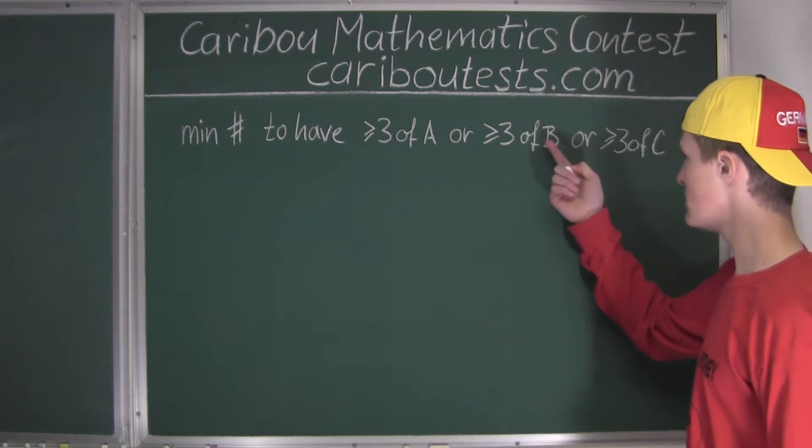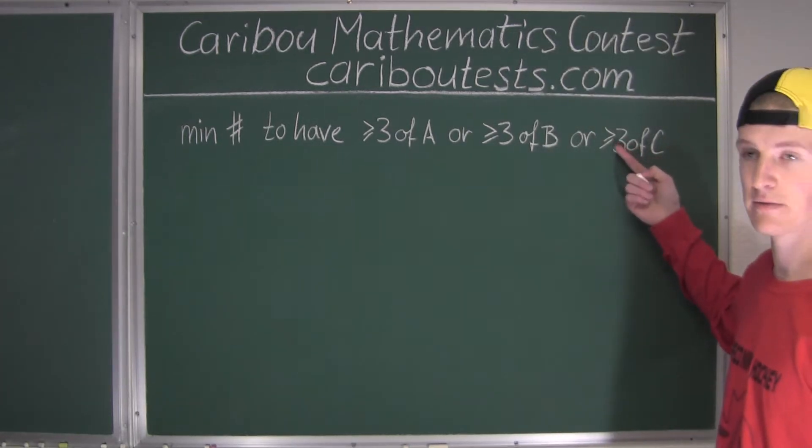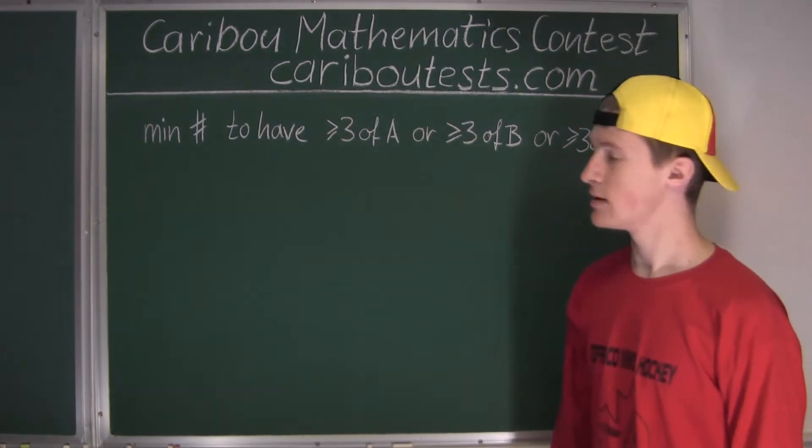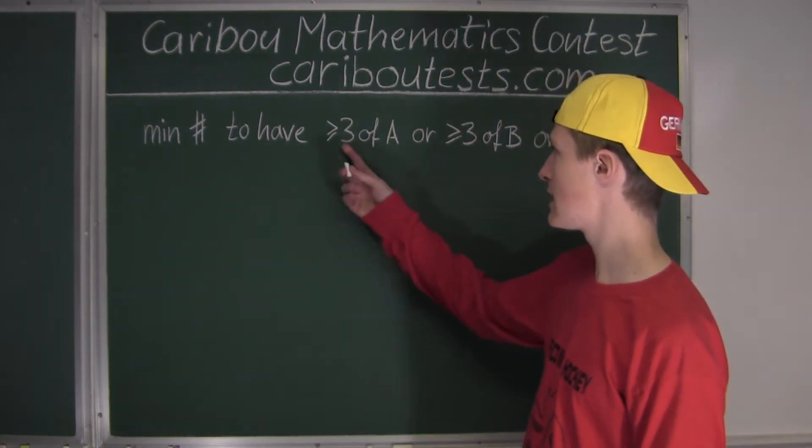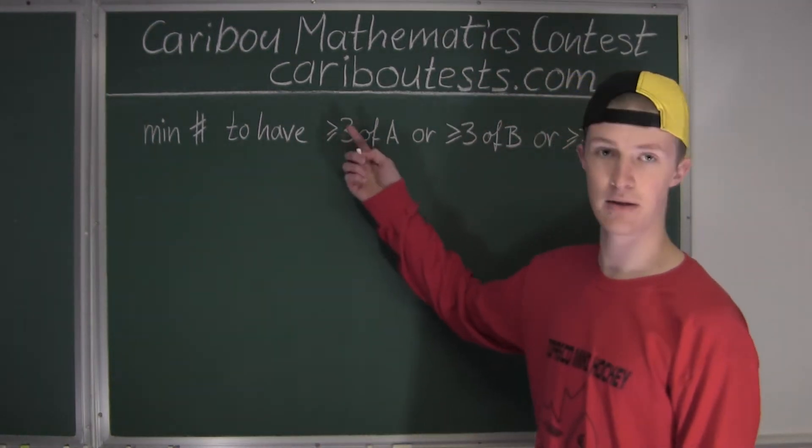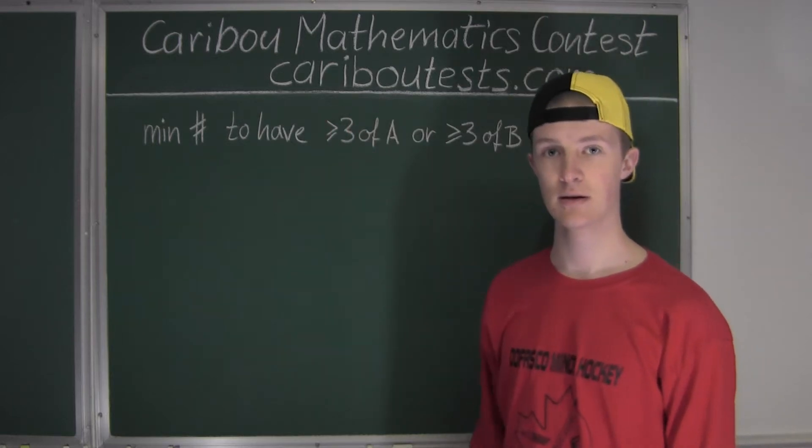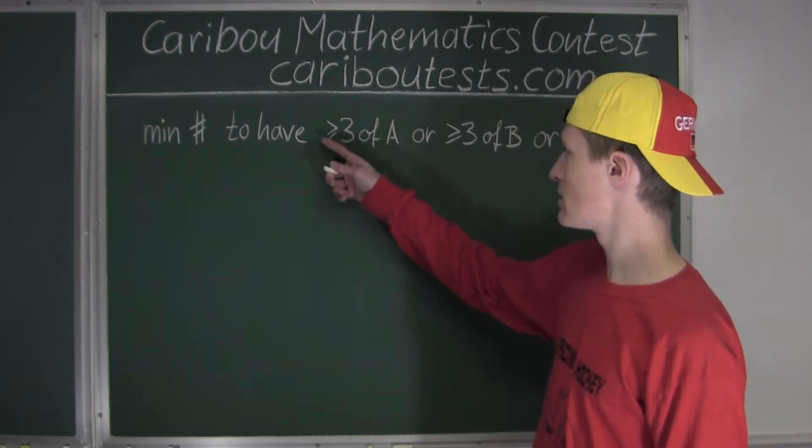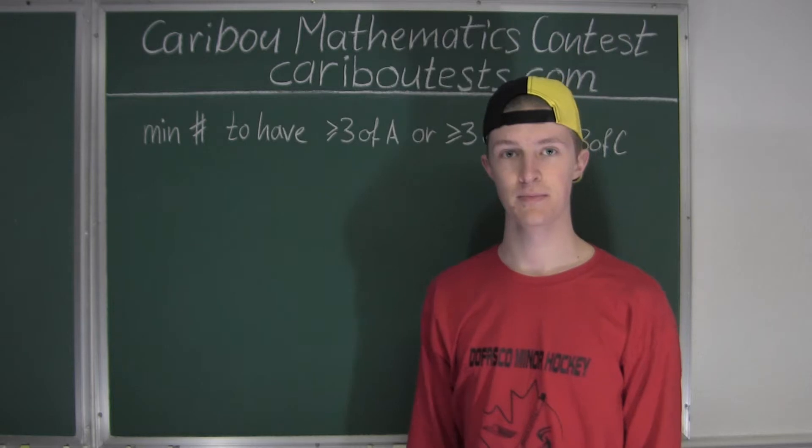Or at least three candies of type C. Now 'at least' means that we can have either that number, so three or more candies, which is where the greater than or equal sign comes in.